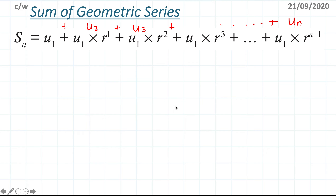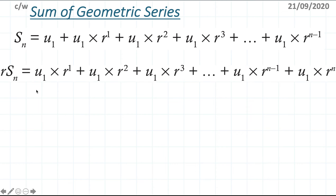Now I'm going to manipulate this sum by multiplying every term by r, giving me r times Sn. The first term becomes u1 times r to the power of 1, the next becomes r squared, then r cubed, and so on.